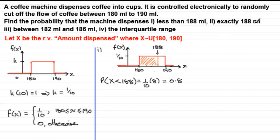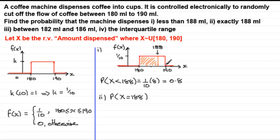In part two, we need to find the probability the machine dispenses exactly 188 millilitres. Because we're dealing with a continuous random variable, you cannot have an exact value — so that probability is equal to zero.